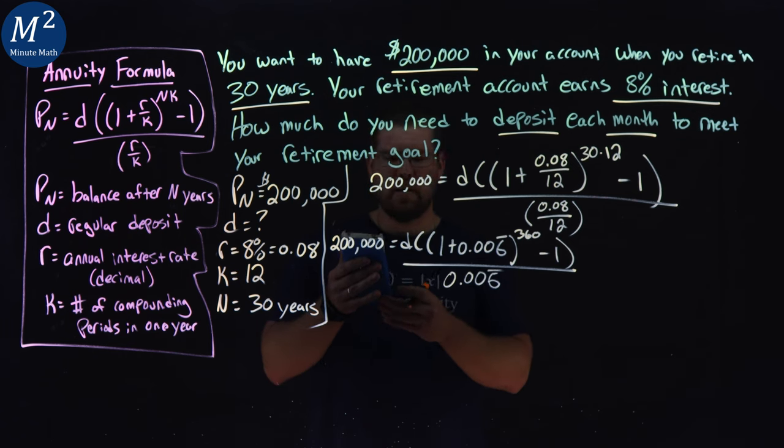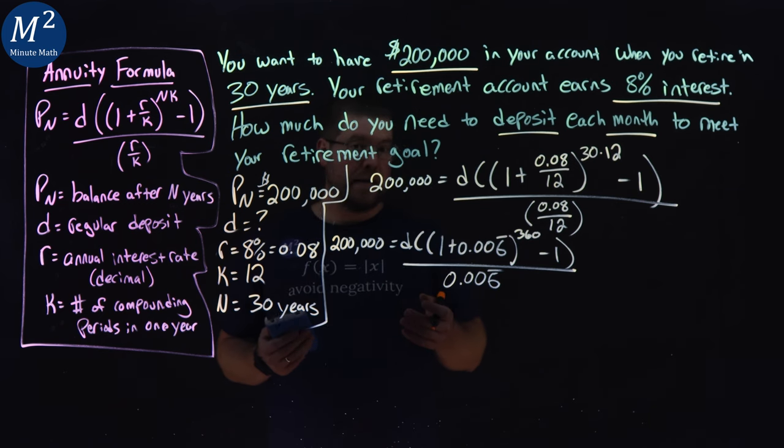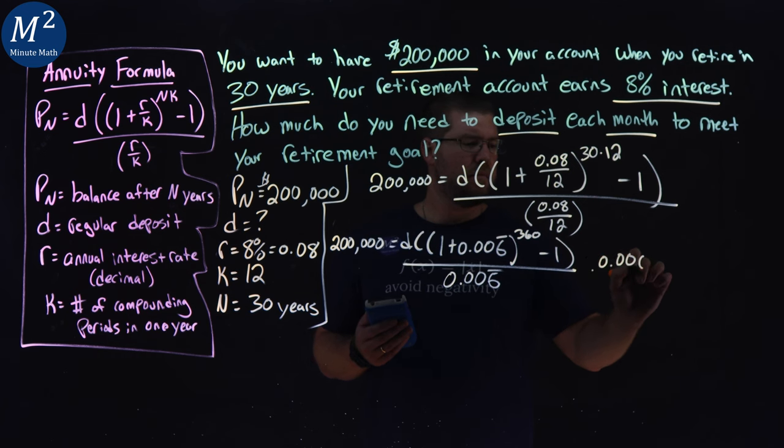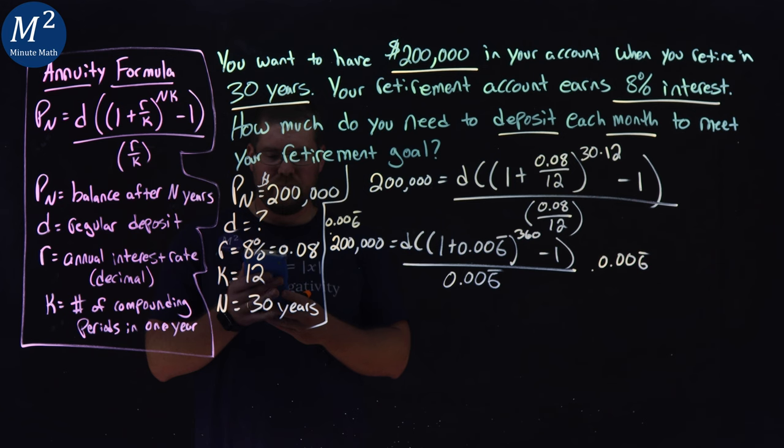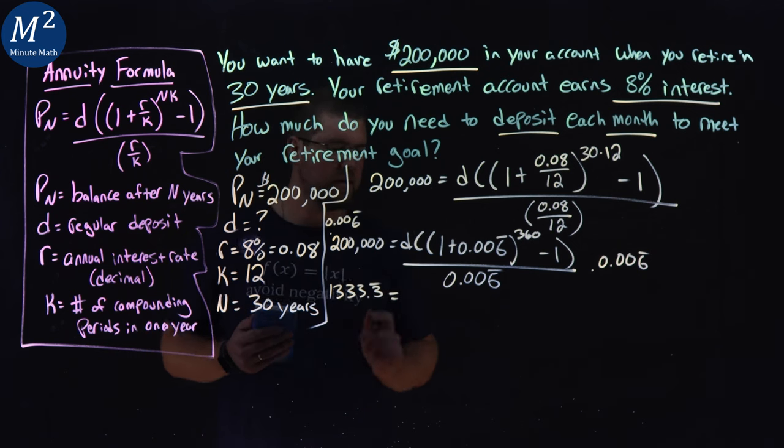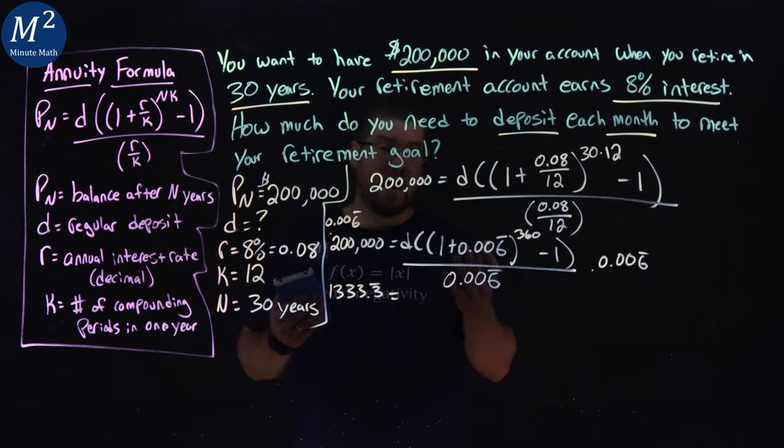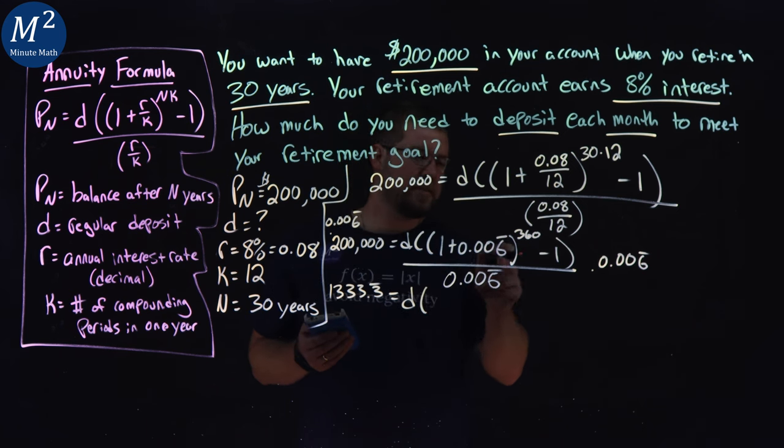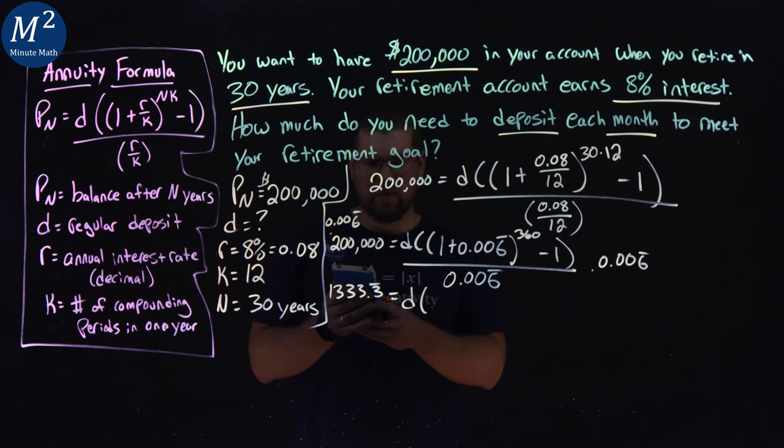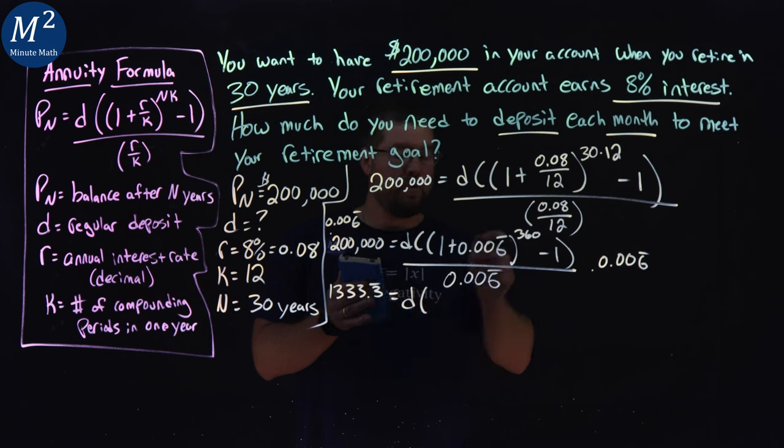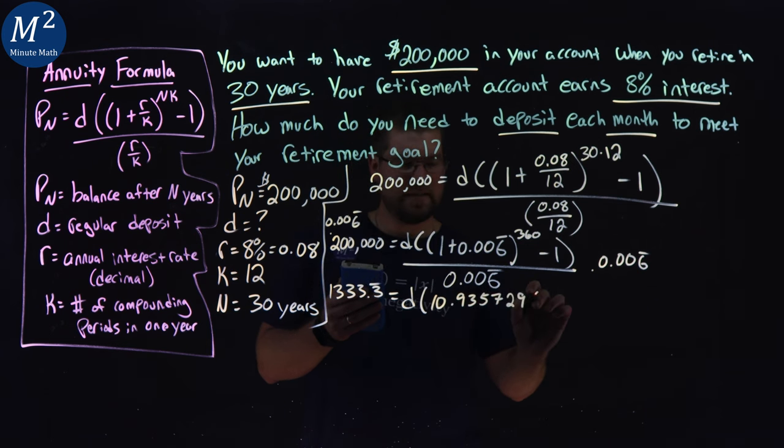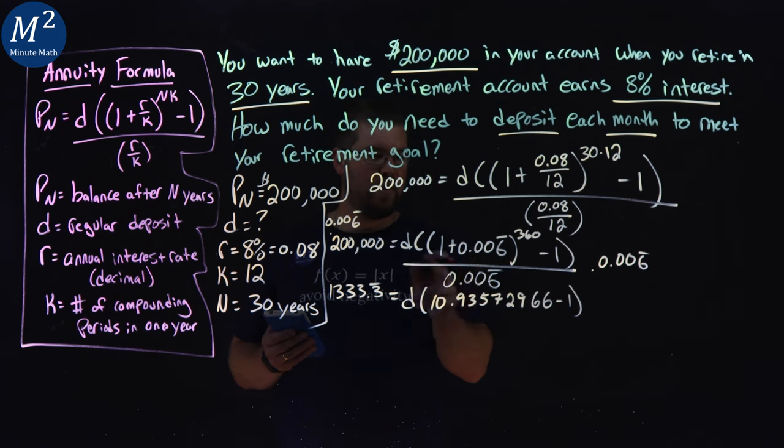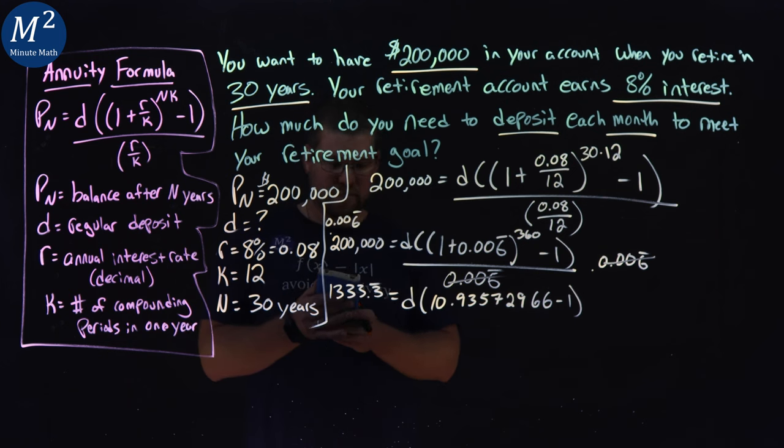So now I want to simplify where we can. I'm going to multiply that 0.006 repeating to both sides. Multiply that by 200,000, and we get 1333.3 repeating. If I get repeating, I like to keep that noted so I can deal with it a little later. Or just not have rounding errors. Then we have D times 1 plus 0.006 repeating is just 1.006 repeating. To the power of 360 is 10.93572966. We subtract that 1. Not too bad.